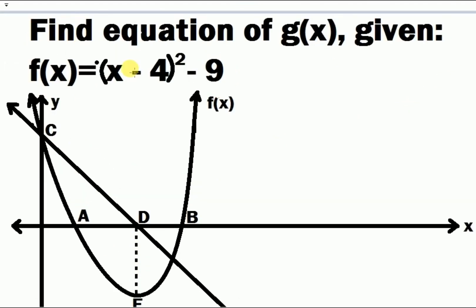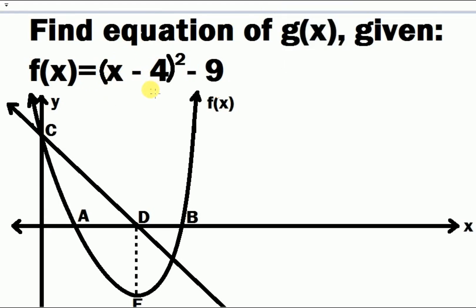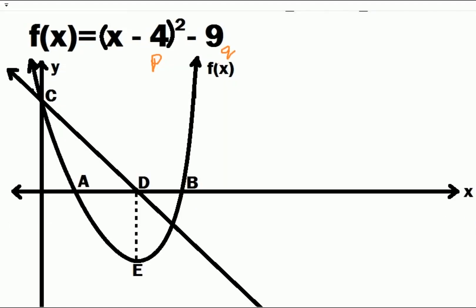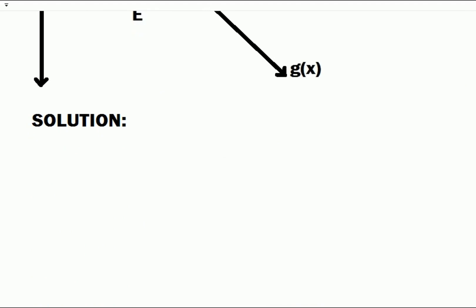From the given equation of F of X, the first thing we are able to notice is that the equation is given in vertex form — that is, turning point form. So already we have our P and our Q. At this point you can already tell that we have the coordinates of the turning point: P is our X coordinate and Q is our Y coordinate. So the coordinate of E is (4, negative 9).